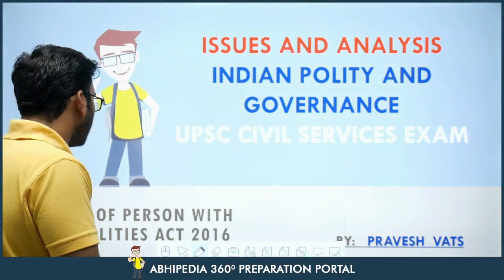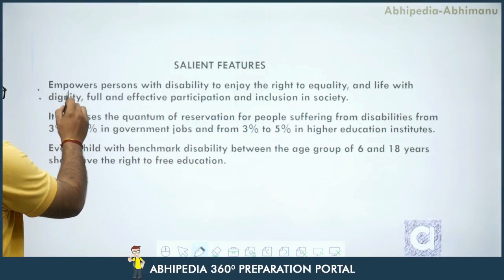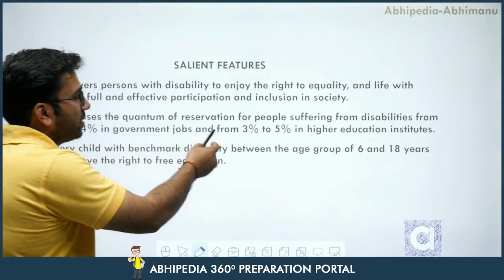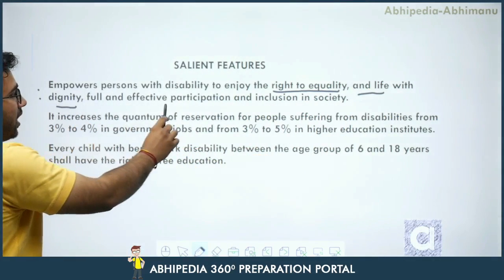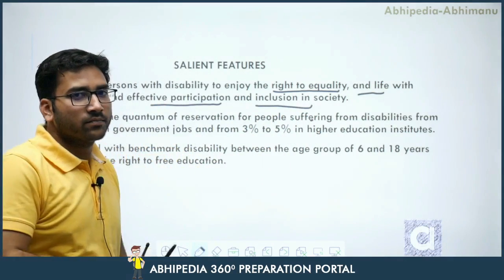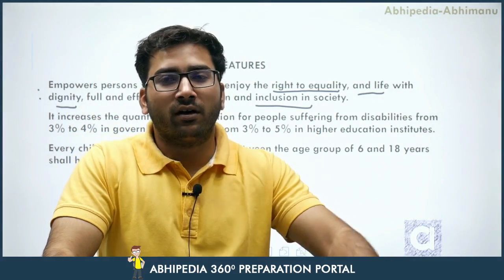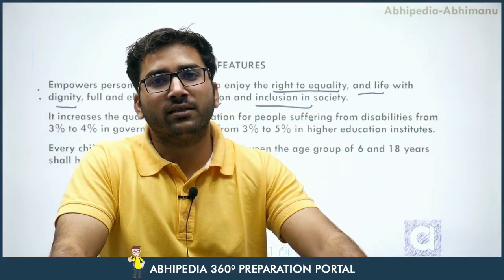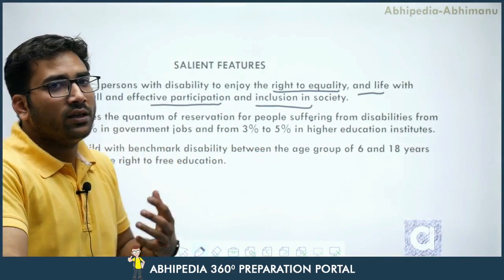The Rights of Persons with Disabilities Act 2016 — what are its salient features? First, it empowers persons with disability to enjoy the right to equality, life, dignity and full participation and inclusion in society. Inclusion means giving space to the marginalized section into the mainstream of society, ensuring effective participation in each and every corner of society and its functioning.